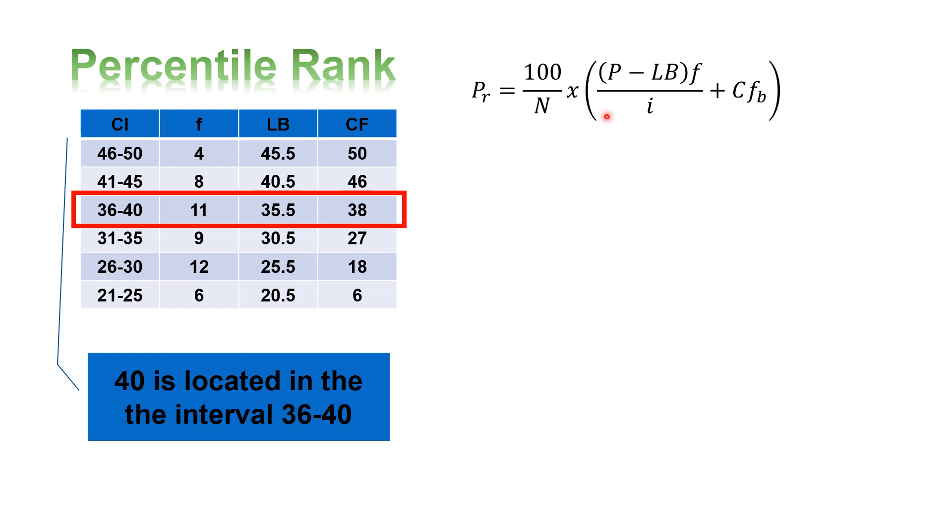Using the formula, 100 divided by N, times the raw score of interest, minus the lower boundary, times the frequency, divided by the interval, plus the cumulative frequency below, can be taken from the class interval 36 to 40. Your N is 50, that's the total frequency.